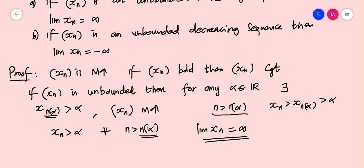So clearly, if the sequence XN is monotonic increasing and unbounded, it diverges to plus infinity. If it is not bounded above, part A is established.